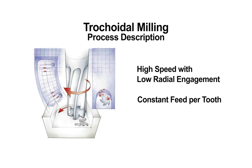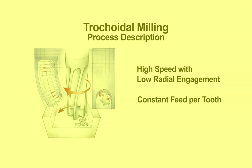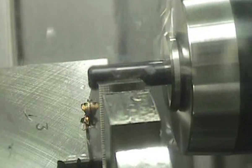Trochoidal Milling combines the benefits of two different techniques: high-speed machining with low radial engagement, plus maintaining a constant feed per tooth regardless of straight line or arc movements.